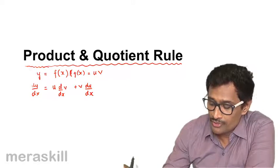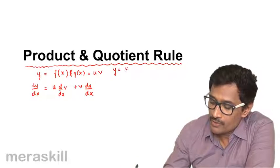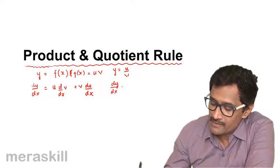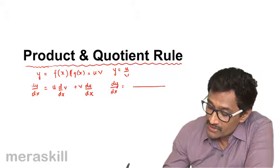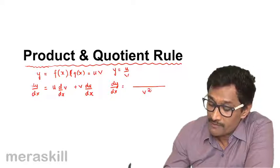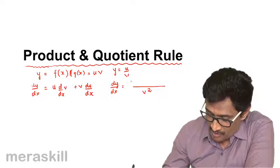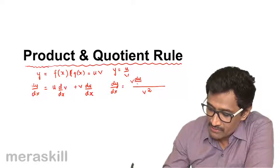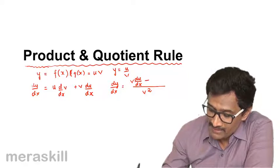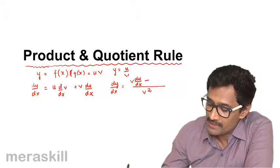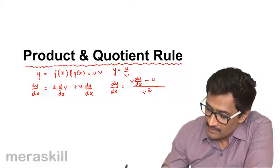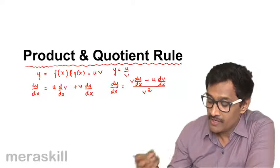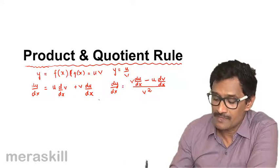For the quotient rule, suppose y = u/v. Then dy/dx is given as: the denominator squared in the denominator, and the numerator has the denominator into the derivative of the numerator, minus the numerator into the derivative of the denominator. Remember, it's a minus sign here, not plus.